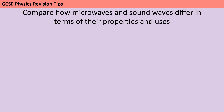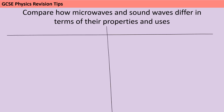As I've already said, this question is perfect for answering in the form of a table. The advantage of using a table is that it makes it really clear to your examiner that you've properly compared the two and included information about both types of wave. It's also going to save you a little bit of time by not needing to write the same words twice.